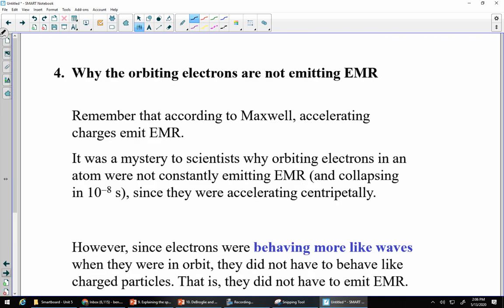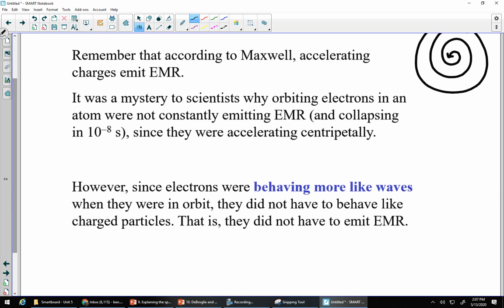Finally, why the orbiting electrons are not emitting EMR. Remember, Maxwell said that any time we have accelerating charged particles we create EMR. They give off EMR. And if they're giving off energy they should be losing speed and they should spiral and crash into the center, and matter should take up essentially no space. That's not what we see. So the whole key is, well, if the electrons are behaving like waves, then they're not behaving like charged particles. And charged particles are the things that give off EMR, not waves. So if they behave like waves, they don't have to be giving off EMR, which is pretty cool.